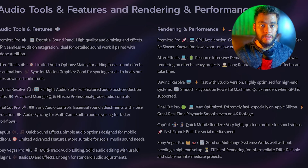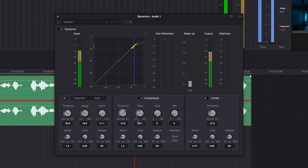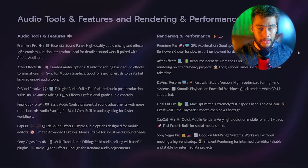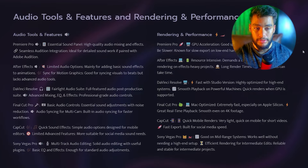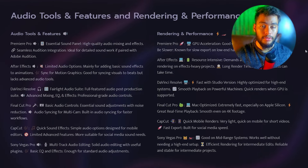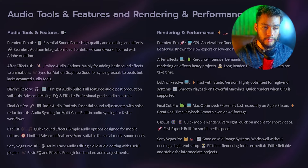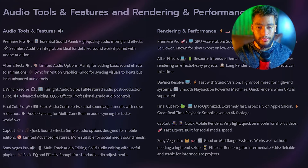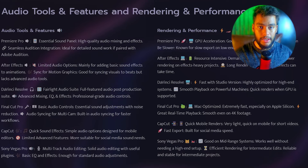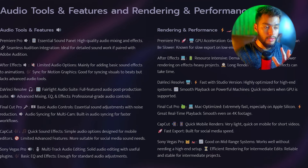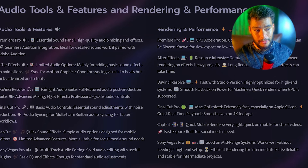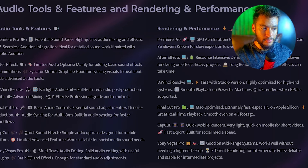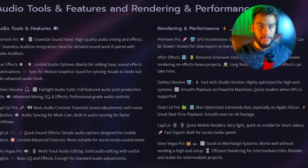DaVinci Resolve is very detailed in terms of audio editing. It has a separate suite called the Fairlight Audio Suite, in which you have all of the tools to do pretty much anything with your audio. Final Cut Pro is next — basic audio controls, sound adjustments, and audio syncing, although it does have an automatic audio syncing feature which can be useful for some editors. CapCut is one of the worst editing softwares when it comes to audio editing — super annoying to use, you'll waste so much time trying to time sound effects and music. After Effects is a motion graphics software and is not good for advanced audio editing.